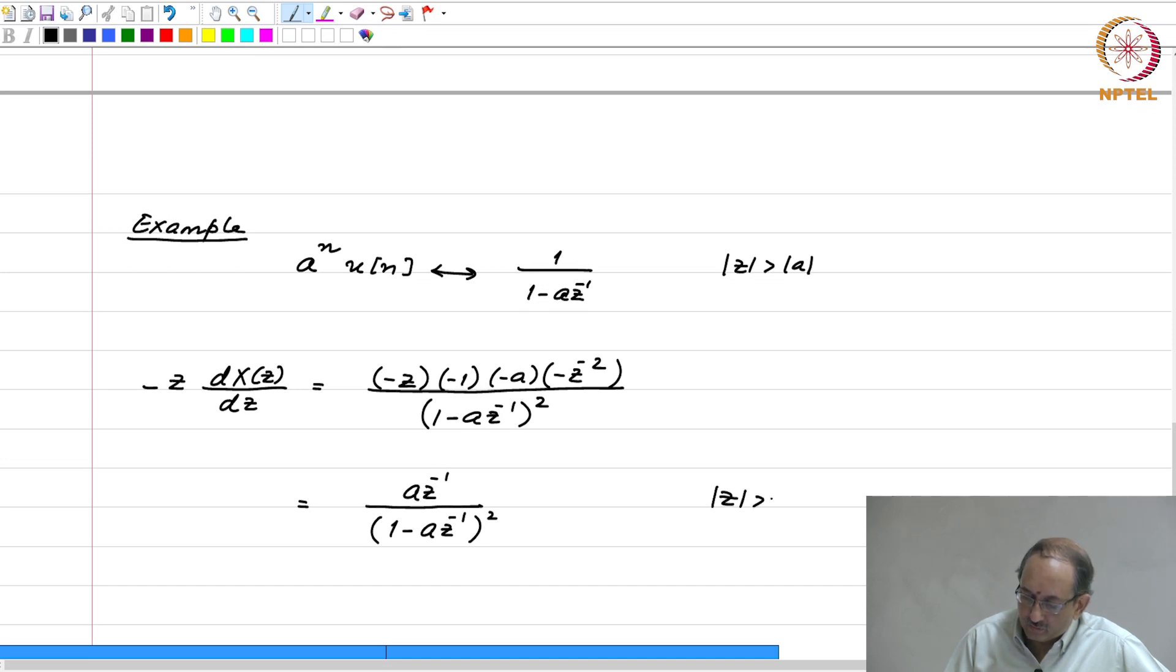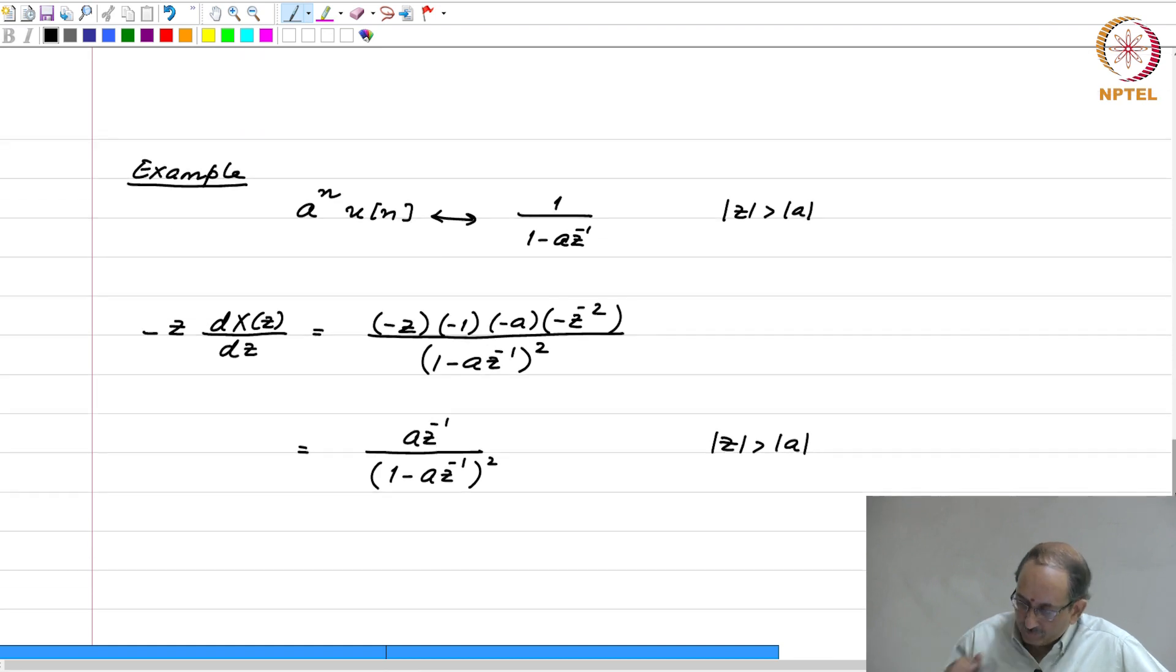So, this of course, is mod z greater than mod a and this has to be the transform of N times X of N. So, you have N a to the N u of N. So, this has transform a z inverse by 1 minus a z inverse whole squared.